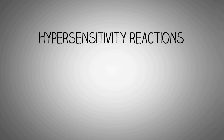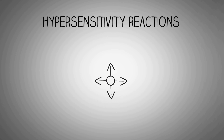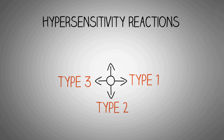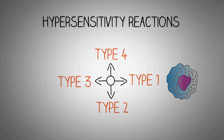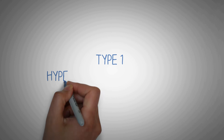Hypersensitivity reactions are of four types, type 1 to type 4, which differ from each other as different components of the immune system are involved in each. In this video, we will only talk about the type 1 hypersensitivity reaction.